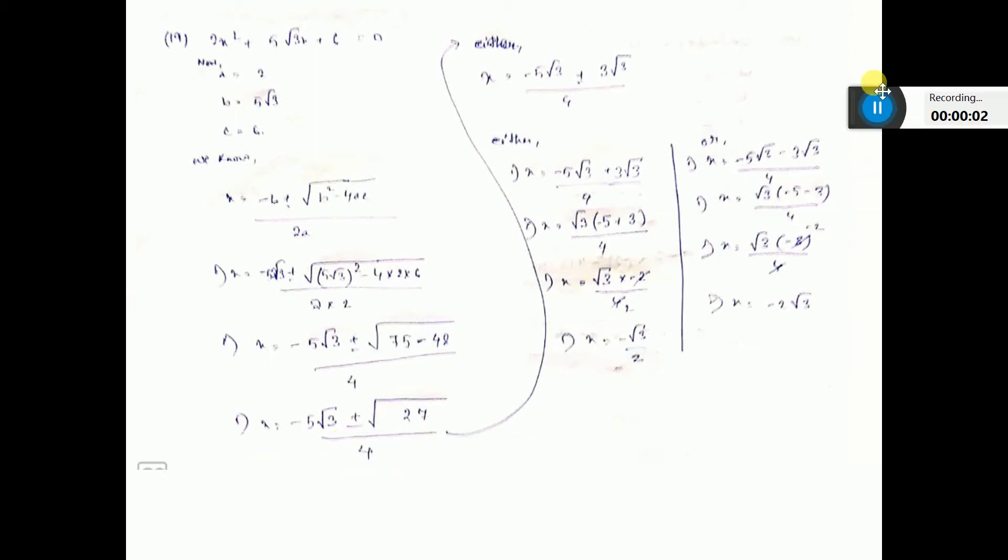Number 19, value of a is 2, value of b is 5 root 3 and value of c is 6.